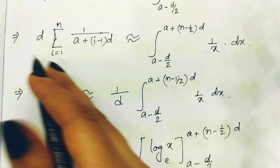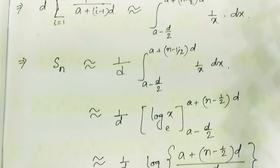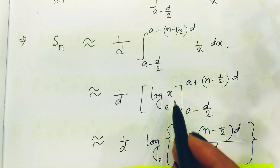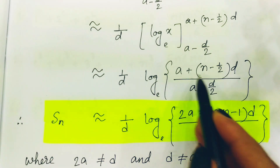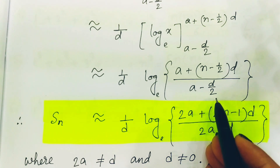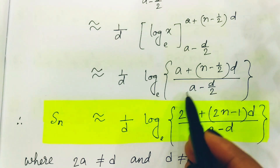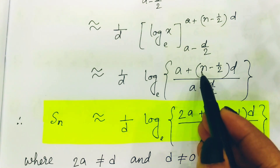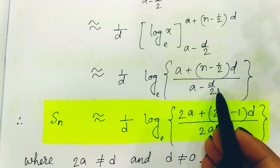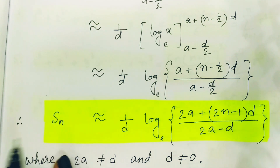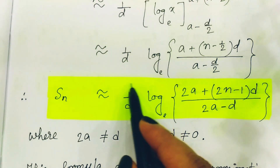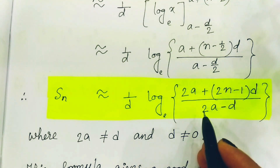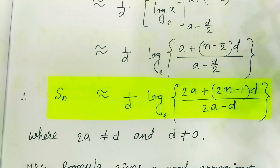The summation part — except for d — is Sn, our required value. So Sn is approximately equal to (1/d) times the integral of 1/x, which gives log x, evaluated from a - d/2 to a + (n - 1/2)d. Substituting these two values, we get log[(a + (n - 1/2)d) / (a - d/2)]. Simplifying by taking LCM of 2, this becomes log[(2a + (2n-1)d) / (2a - d)]. Note that 2a must not equal d, and d must not equal zero, otherwise the expression is undefined.